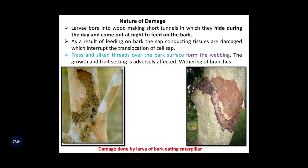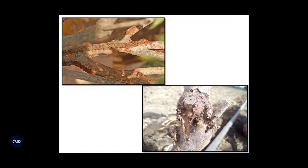Nature of damage: the larva bores into wood making short tunnels in which they hide during the day and come out at night to feed on the bark. As a result of feeding on the bark, the sap-conducting tissues are damaged, which interrupts the translocation of cell sap. Also, frass and silken threads over the bark surface form webbing. The growth and fruit setting are adversely affected, along with withering of branches. Here we can see the damage done by the larva of bark eating caterpillar on the bark and branches.